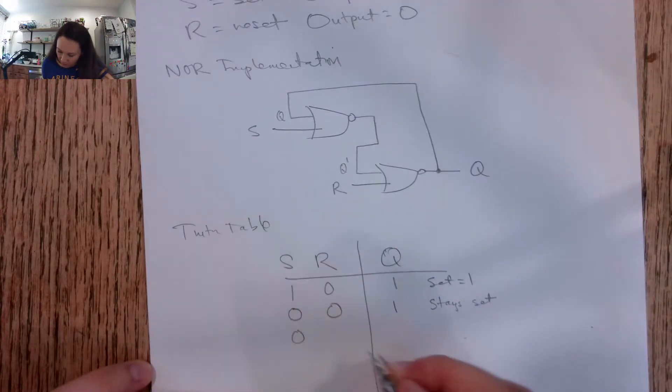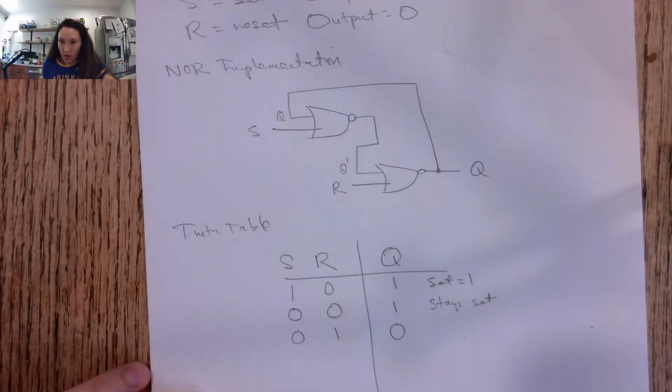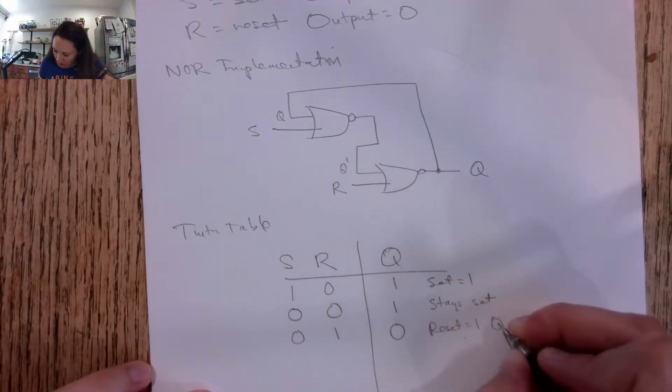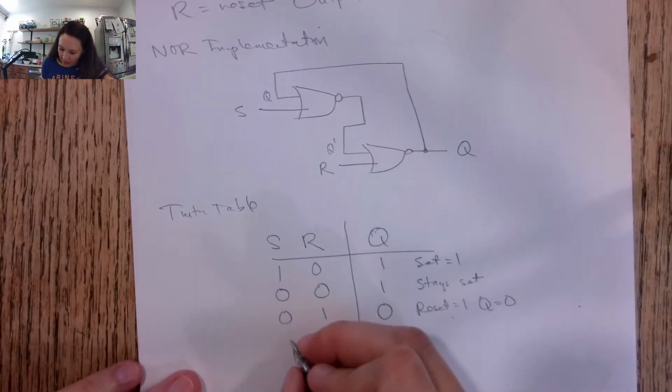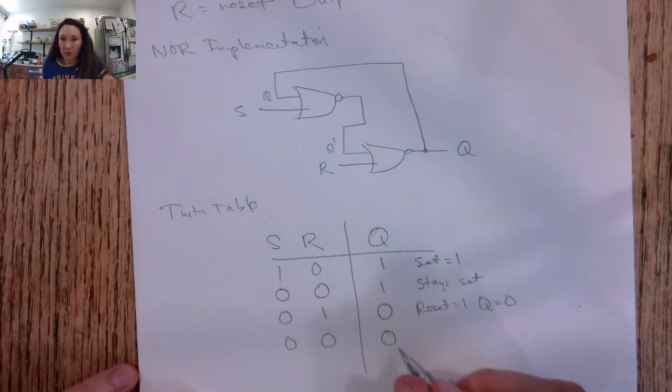So then if we want to reset our latch, reset is high, that is going to force a 0 on our output. So reset equals 1, we're going to set Q to 0. And then even after reset goes to 0, we will still have a 0 latched on our output.